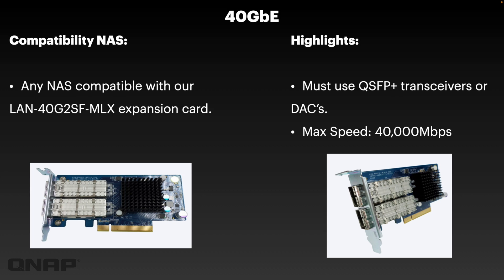Now the last two standards: 40 gig and 100 gig. We don't make any NAS with 40 gig embedded — it's quite a specialty, and the card is a bit more expensive than 10 gig or 25 gig. But we have lots of enterprise rack and enterprise desktop NAS that would be a very suitable companion for this card. It has two 40 gig ethernet ports using QSFP+ connectors, requiring QSFP+ transceivers or DACs. Each port delivers up to 40,000 megabits per second — absolutely huge performance, great for server backbone applications to link to your QNET.